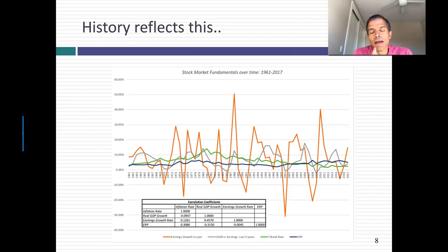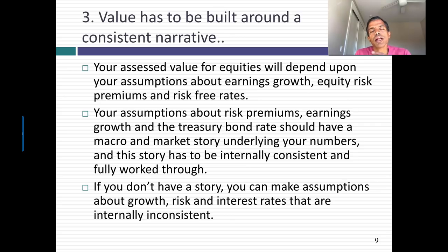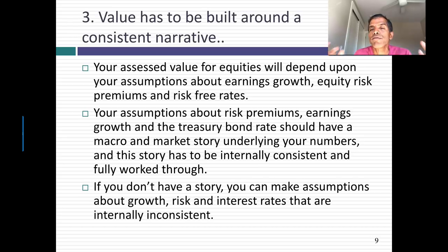Historical data going back to 1961 confirms this: higher inflation has gone with higher earnings growth, pushed up the T-bond rate, and pushed up equity risk premiums. Higher real growth has led to higher earnings growth and lower risk premiums. If you're going to tell a story about the market, that story has to be consistent — you can't just take a piece of the story, like higher T-bond rates, and build your valuation around that alone.